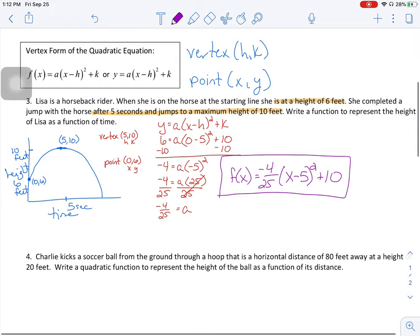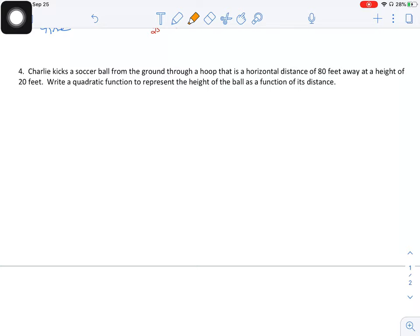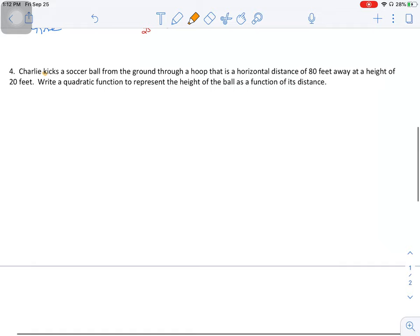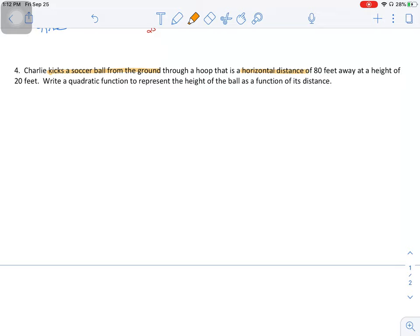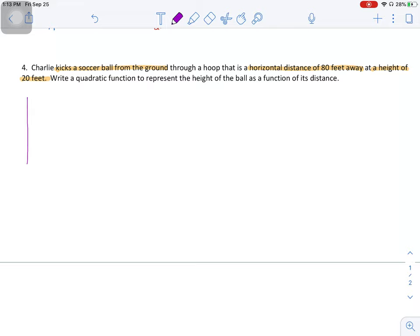I'm going to go ahead and roll on down to number 4. Same thing. Word problem, you want to read it, annotate it, and see if you can draw a picture based off of your information. Charlie kicks a soccer ball from the ground through a hoop that is a horizontal distance of 80 feet away at a height of 20 feet. Write a quadratic function to represent the height of the ball as a function of its distance.